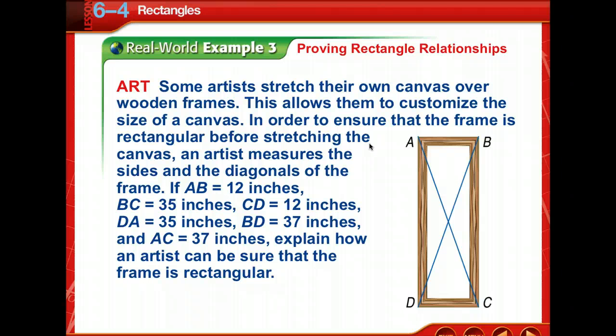Let's look at a real-world example. Some artists stretch their own canvas over wooden frames to customize the size. To ensure the frame is rectangular before stretching the canvas, an artist measures the sides and diagonals. Given AB equals 12 inches, BC equals 35 inches, CD equals 12 inches, DA equals 35 inches, BD equals 37 inches, and AC equals 37 inches, explain how an artist can be sure the frame is rectangular.